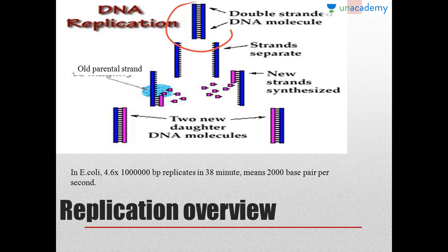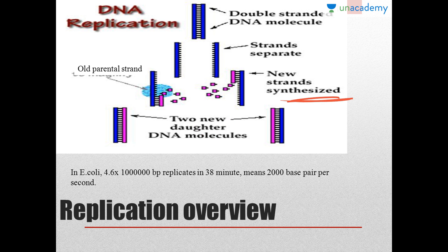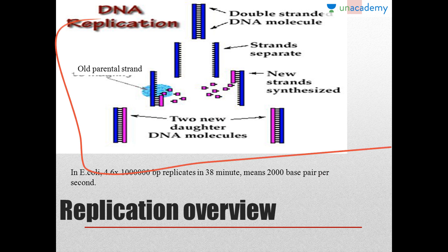Here is a process overview: first, the double helical DNA unwinds with the help of helicase. After unwinding, new strands are synthesized with the help of DNA polymerase. On one strand the DNA is continuous (leading strand), and on the other strand it is discontinuous (lagging strand). On the discontinuous strand, Okazaki fragments are found, and these fragments are joined with the help of DNA ligase. This is how DNA replication takes place.